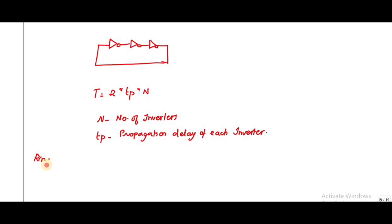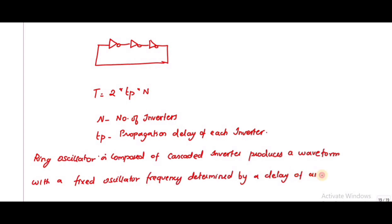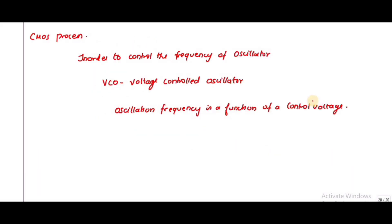A ring oscillator is composed of cascaded inverters which produce a waveform with a fixed oscillating frequency determined by the delay of an inverter in CMOS process.